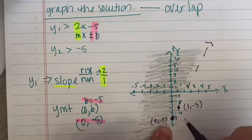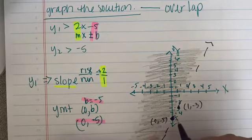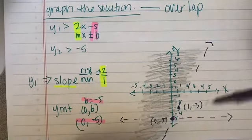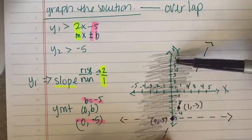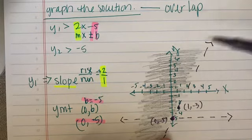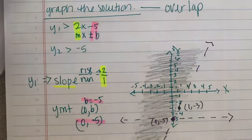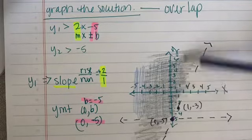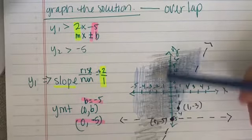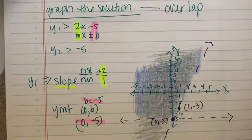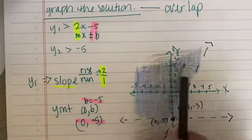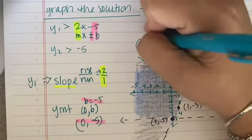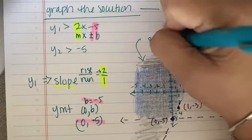Then Y2 is greater than negative 5, so I look for negative 5 and I know that's going to be a horizontal dashed line. Everything greater than negative 5 falls above, because as you move up on the line, the numbers increase. So shade above. The overlap of the colors is going to be your solution — it's bounded by these two equations. That bounded area right in here is the solution.